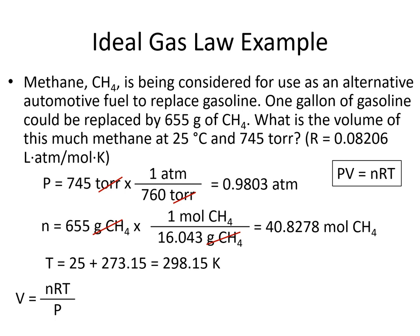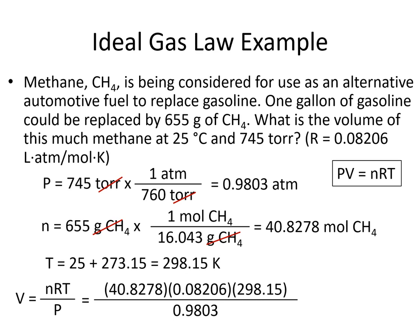Now we have all the units needed to plug into our equation. Rearranging the ideal gas law to solve for volume: V = NRT/P. Plugging in 40.8278 moles, R = 0.08206 L·atm/(mol·K), T = 298.15 K, and P = 0.9803 atm, we get 1019 liters.